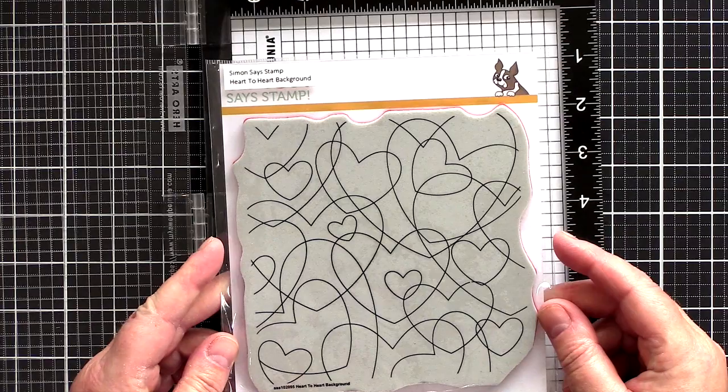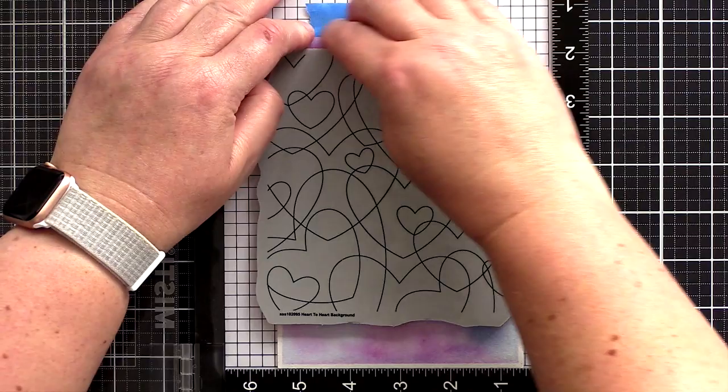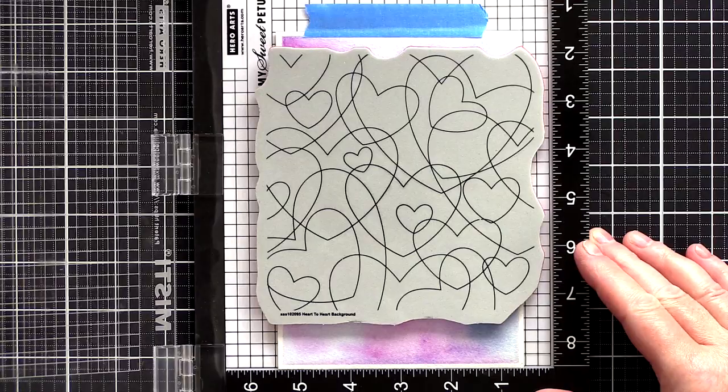So it is only at this point that I'm getting out the Heart to Heart background stamp in order to white heat emboss the pattern and this is my tip. You could have heat embossed the pattern before watercoloring which does allow for lovely puddling of the color in the wells created from the heat embossing.